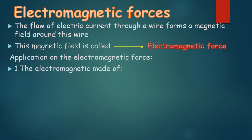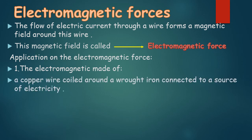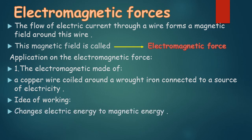Application on the electromagnetic force. Number one, the electromagnet is made of copper wire coiled around wrought iron connected to a source of electricity. The idea of working of an electromagnet changes electric energy to magnetic energy.